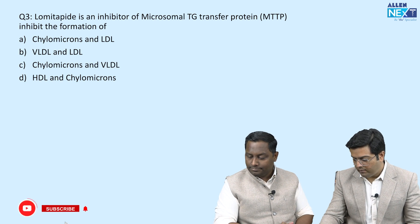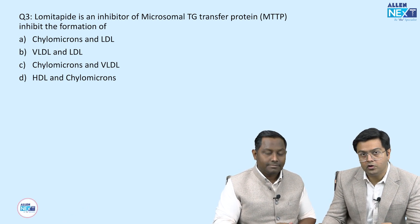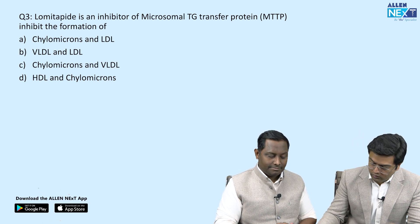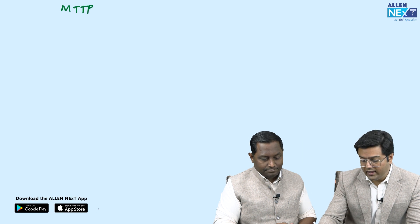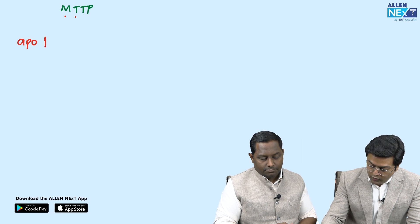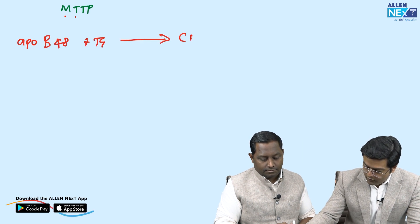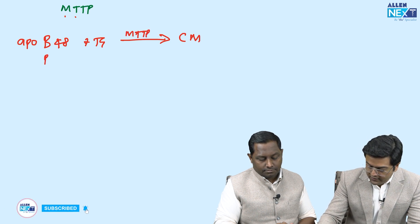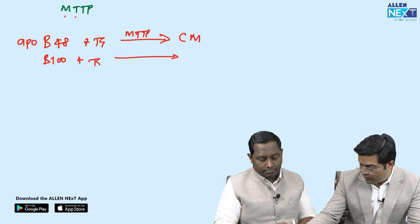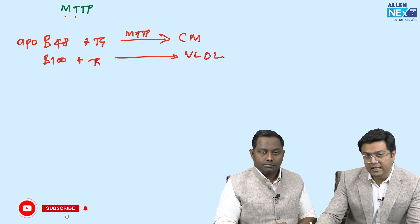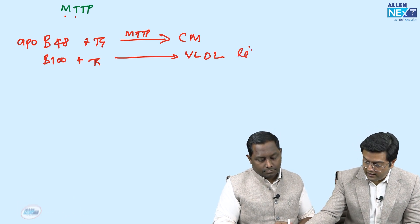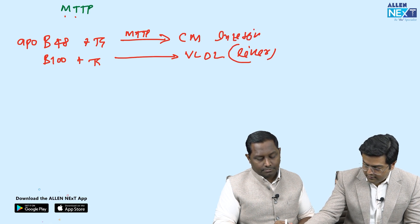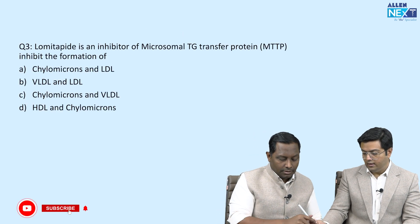Question three is about lomitapide. Lomitapide is an inhibitor of microsomal triglyceride transfer protein (MTTP). The options are various lipoproteins. MTTP is present in microsomes of the endoplasmic reticulum and transfers triglycerides to ApoB-100 and ApoB-48. When it transfers TG to ApoB-48, chylomicrons are formed; when to ApoB-100, VLDL is formed. So MTTP makes both chylomicrons and VLDL.